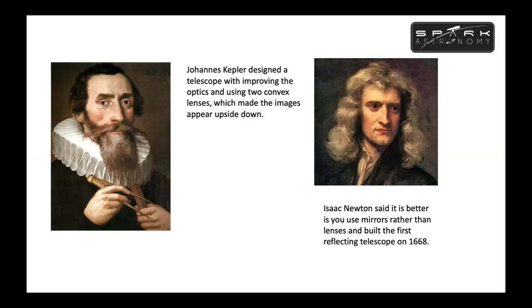Then Isaac Newton came into the picture. Isaac Newton said it is better to use mirrors rather than lenses, and he built the first reflecting telescope in 1668. Johannes Kepler designed a telescope, and then Newton also designed the telescope — but he made the first reflecting telescope in 1668. This is important to understand.